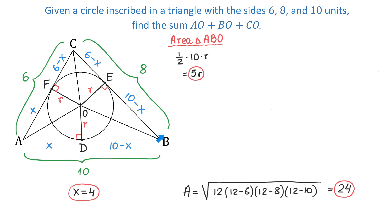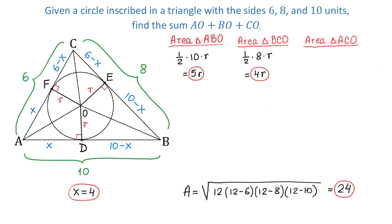Next, we look at triangle BCO. In this triangle, the base is 8 and the height is R. To find the area, we multiply one half by 8 and by R, which equals 4R. And in triangle ACO, the base is 6 and the height is R. The area of this triangle is one half times 6 times R. One half times 6 is 3, and 3 times R is 3R.